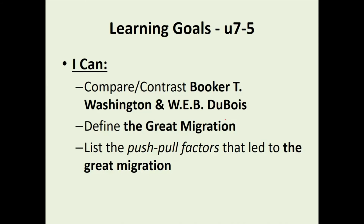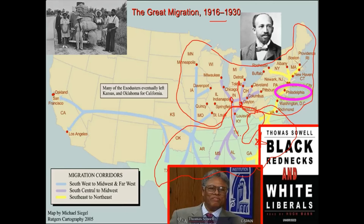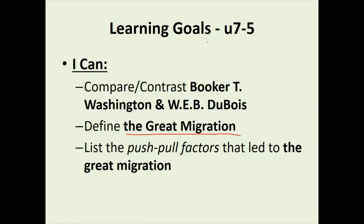To compare Booker T. Washington and W.E.B. Du Bois: their differences are sometimes exaggerated — one was more politically active, one believed in vocational education. The Great Migration is simply the movement of Black Americans to northern cities from 1910 to 1930. If you want to dig deeper, look into Thomas Sowell, Malcolm Gladwell, J.D. Vance, and Alexis de Tocqueville. And remember push-pull factors: the things that push you out and the things that pull you toward a new place. Thanks for joining.